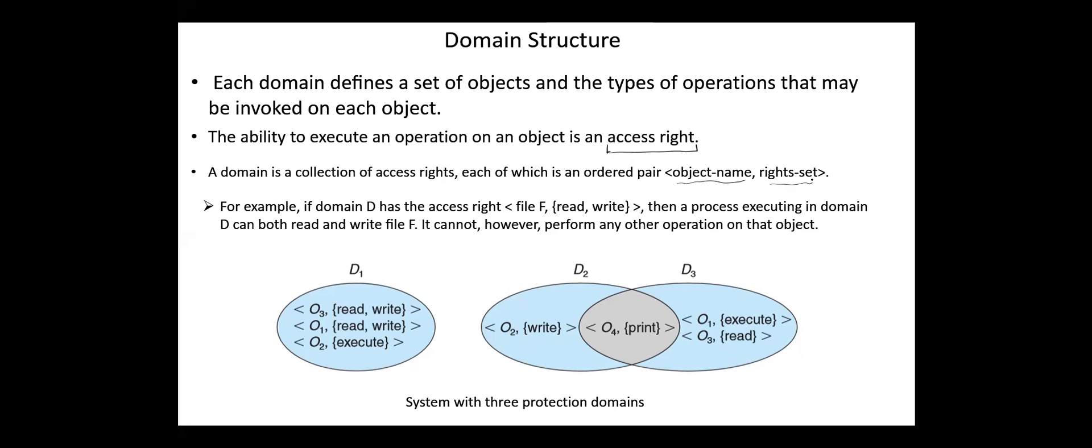For example, if domain D has the access right file F read-write, then a process executing in domain D can both read and write file F. It cannot perform any other operations on that object.